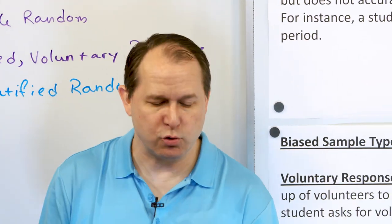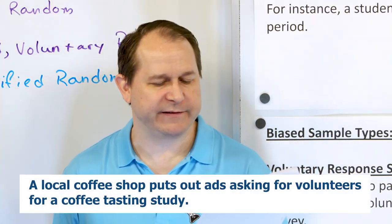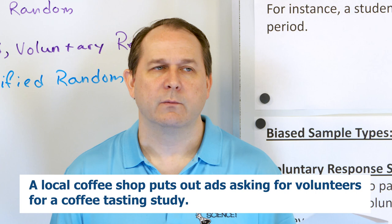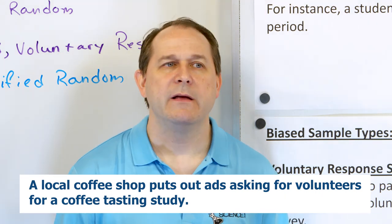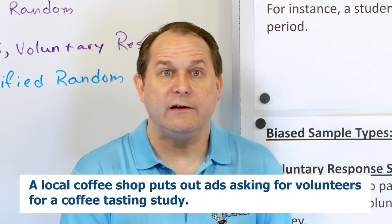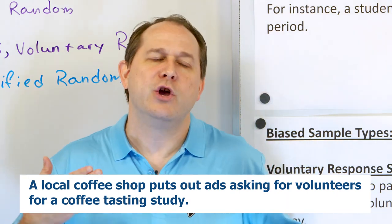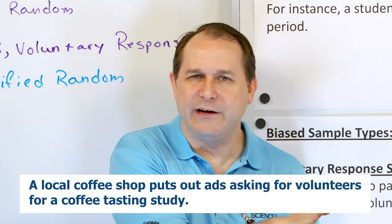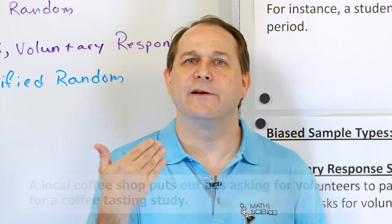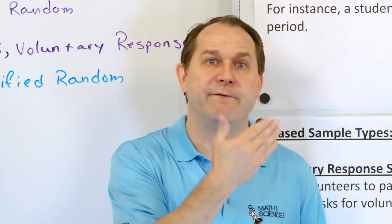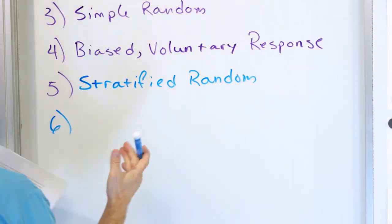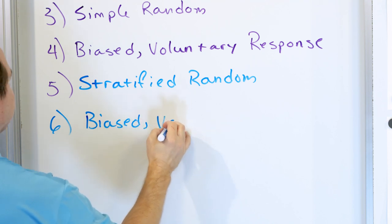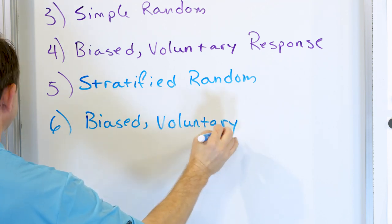Problem six: A local coffee shop puts out ads asking for volunteers for a coffee tasting study. Is this random or biased? You're putting out ads asking people to volunteer their time. The people likely to volunteer might love coffee more or spend lots of time in the shop. When you ask for volunteers, you can have all kinds of biases. This is a biased voluntary response sample.